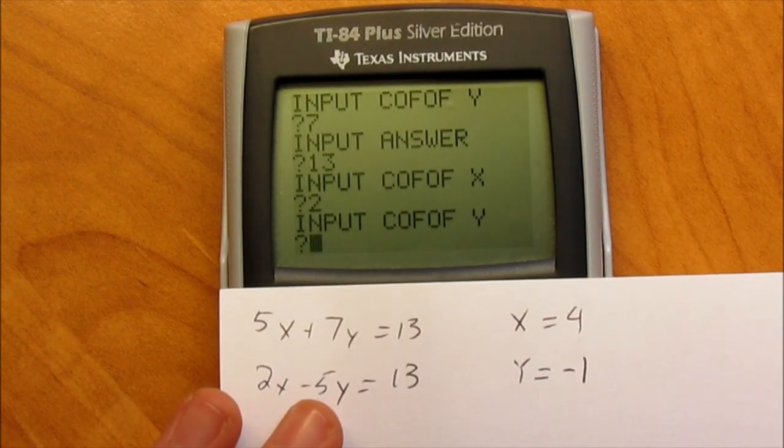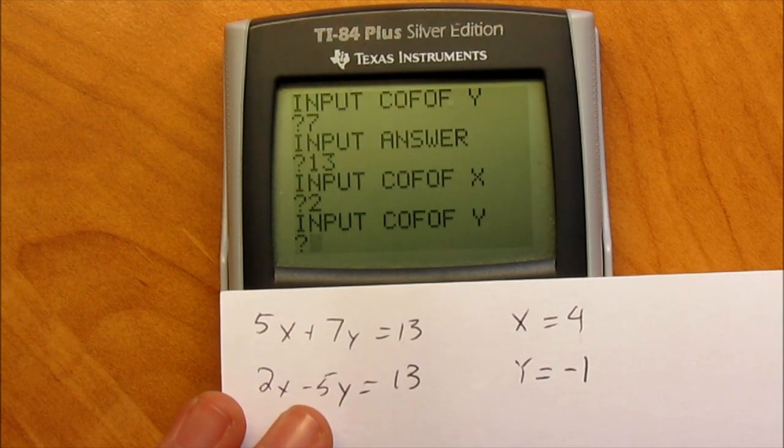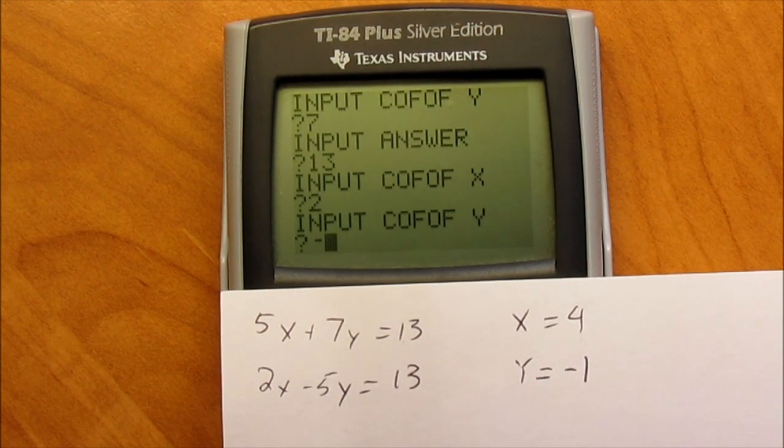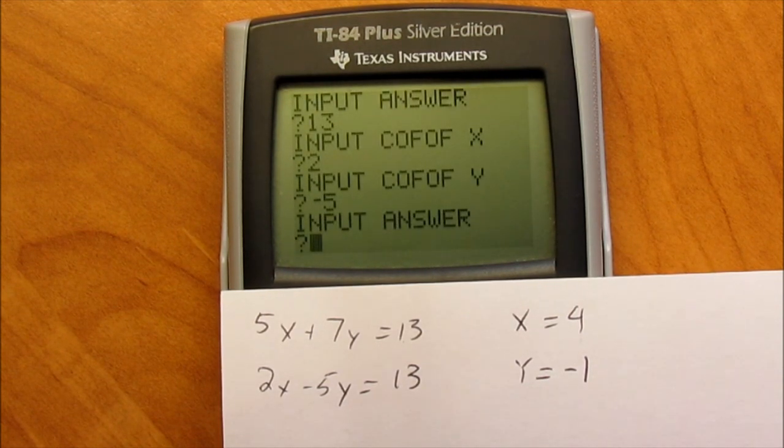Then negative 5. You have to be very careful. If you would just put in 5, this wouldn't work. It has to be negative 5. There's a subtraction sign. So negative 5. And the answer is 13.